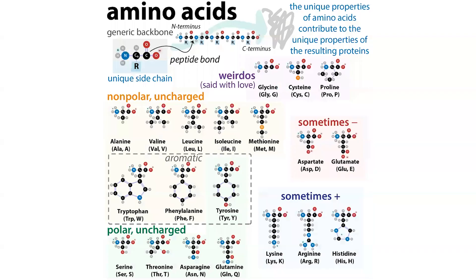This is important because those individual residues have different side chains, and those side chains have different properties that are going to influence how the protein folds. It's also important because in the context of a protein, these amino acid residues are going to act differently than the free-floating amino acids. The surrounding context of that side chain sticking off of the protein is going to be differently reactive than that same side chain when it's just free-floating.